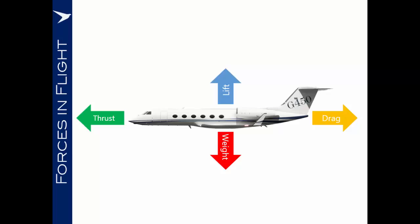If, however, we were to increase the magnitude of one of these forces — for instance, to advance the throttles and increase the thrust being generated by the engines — the thrust vector would be larger than the drag vector, and we would feel an acceleration of the aeroplane, which is manifested by the aircraft speeding up.